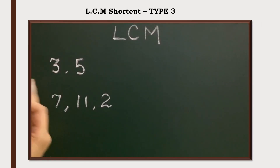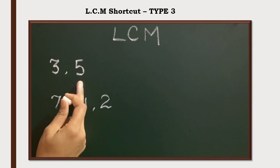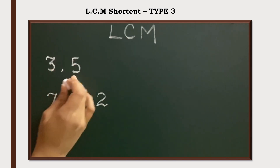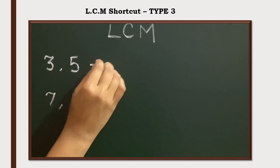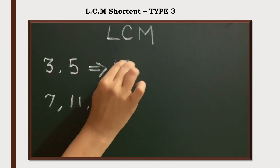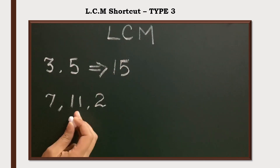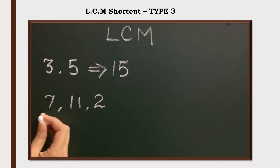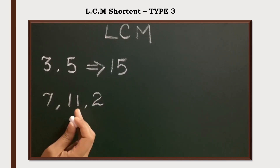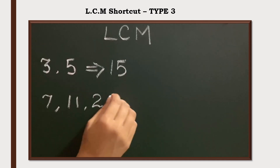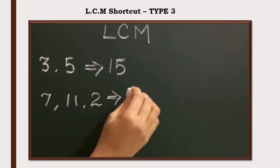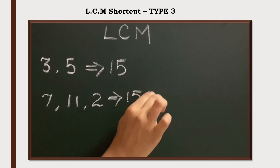Type 3: if the numbers are prime, then to find the LCM, just multiply the numbers. 3 into 5 is 15, so LCM of 3 and 5 is 15. For LCM of 7, 11, and 2 — they are all prime, so multiply: 7 into 11 is 77, and 77 into 2 is 154. So LCM of 7, 11, and 2 is 154.